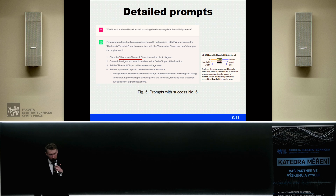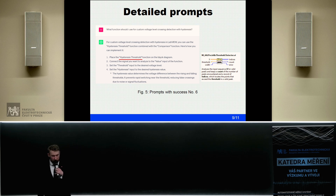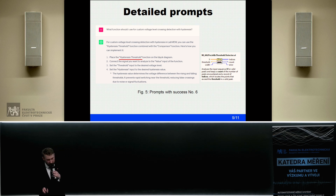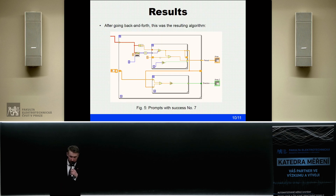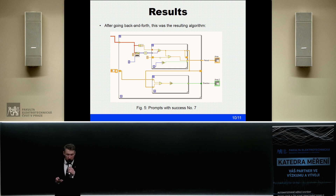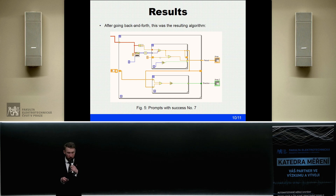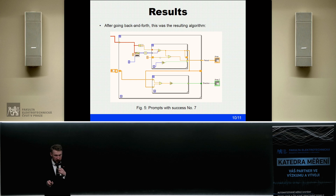Another prompt I used was: what function should I use for custom voltage level crossing detection with hysteresis? Hysteresis is something needed when dealing with detection of edges. It advised me the function 'hysteresis threshold,' which is not exactly existing, but it led me to the discovery of another function which could be used — the threshold detector. So, to summarize the results: ChatGPT was unable to help me create the application on its own. It did not lead me to place something somewhere and connect wires. I had to do it on my own. It only helped me find the keywords so I could understand what to use to solve my problem — it was some kind of advisory.